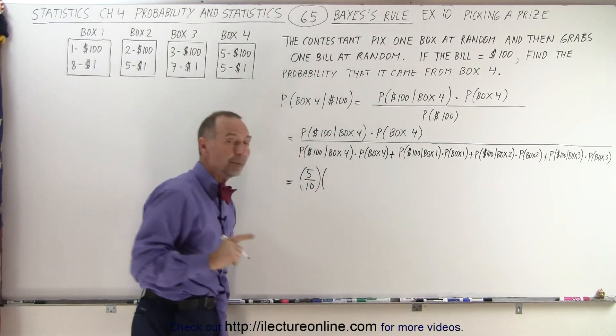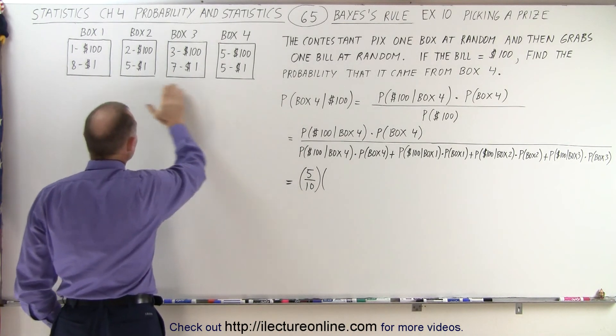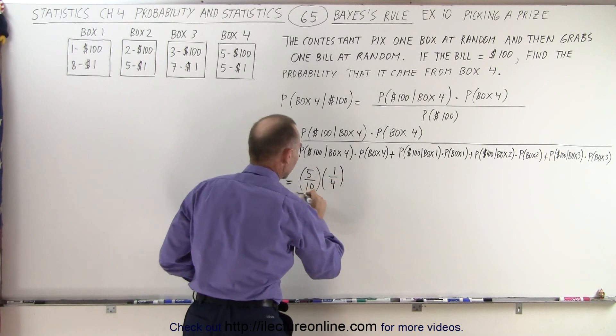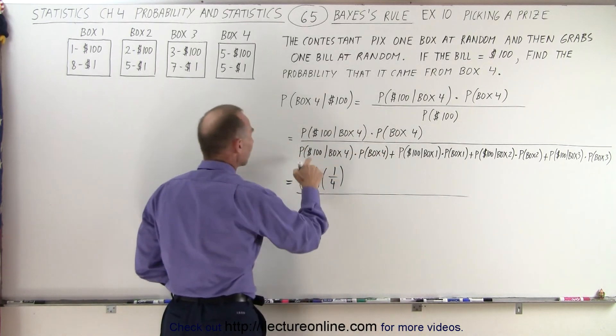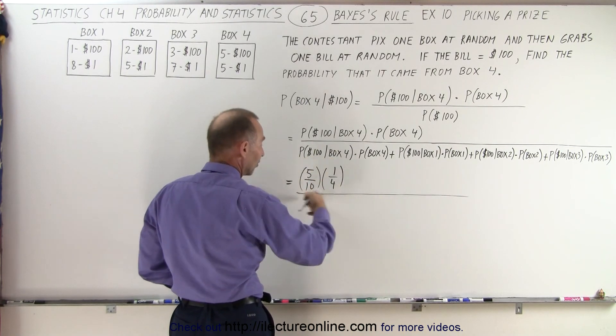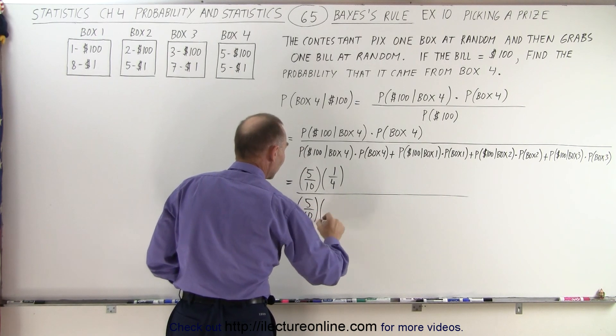And the probability that we'll pick box four, assuming that it's an equal probability for any of the four boxes, that means it's a one-quarter probability for each of the boxes. So we divide that by the probability that a $100 bill was picked when it came from box four. So you can see that's exactly the same as before: five over ten times one over four.